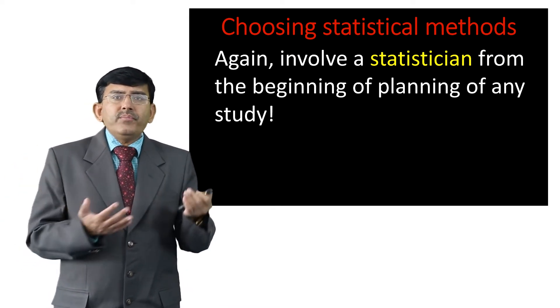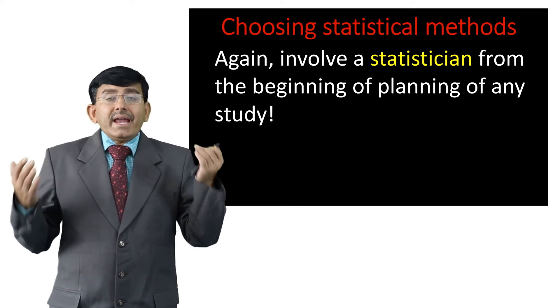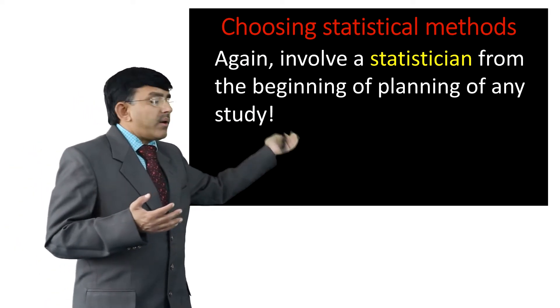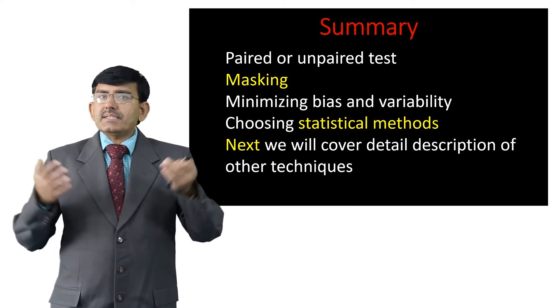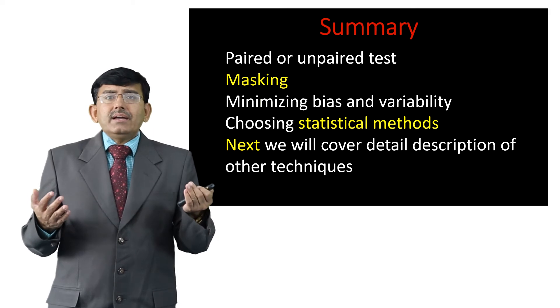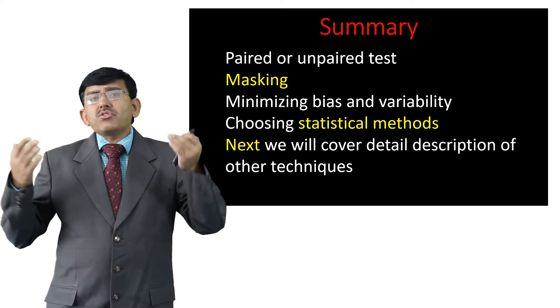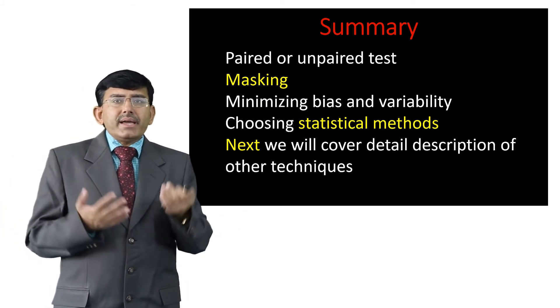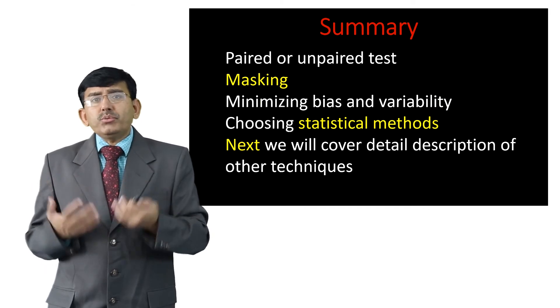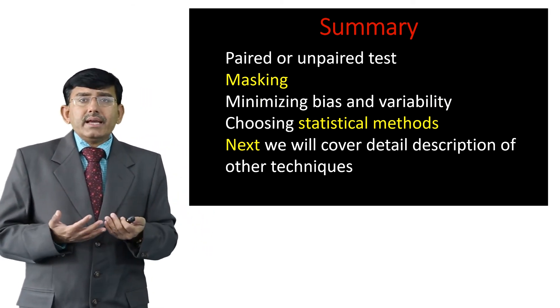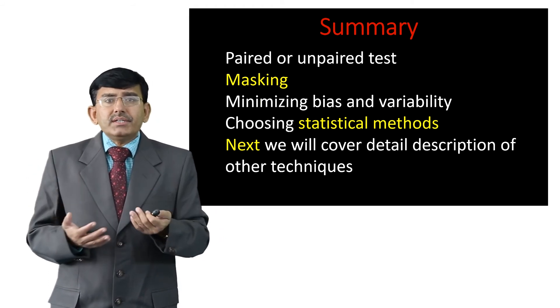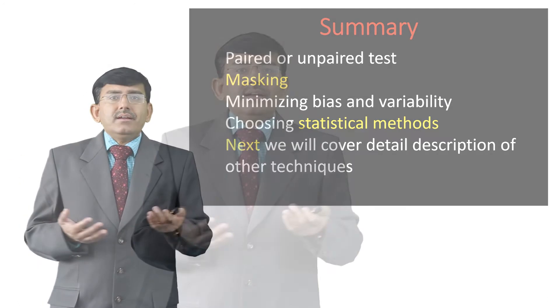Involve a statistician from the beginning of planning any study or software development process. To summarize: paired and unpaired tests are needed; masking is also necessary; minimizing bias and variability must be performed during data collection; and statistical methods must be chosen carefully to avoid false results. Overall, we have summarized masking and statistical methods and their importance for the process of data collection.